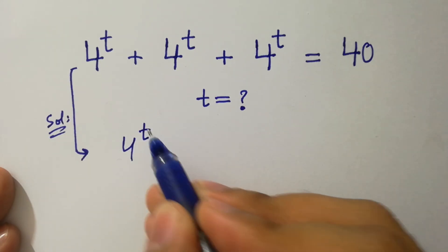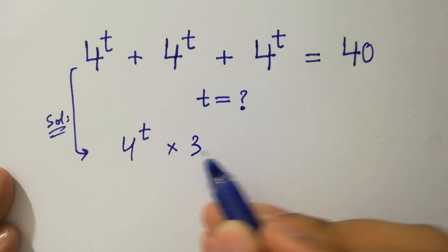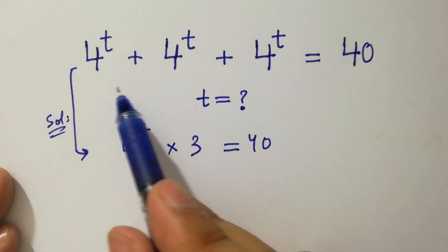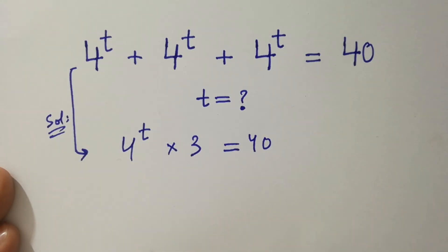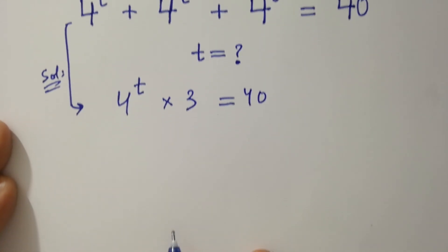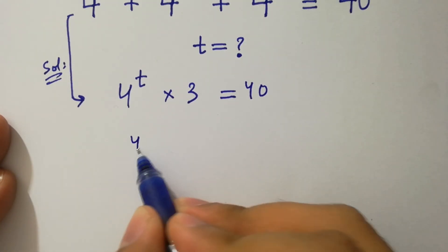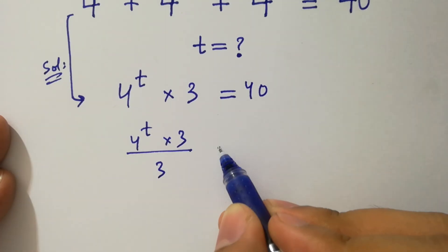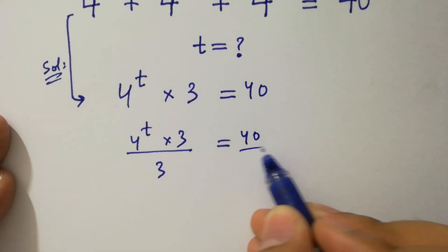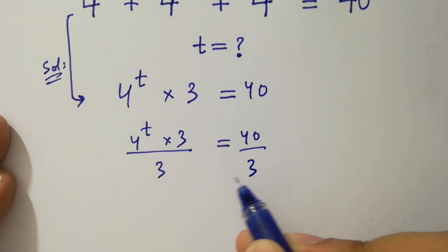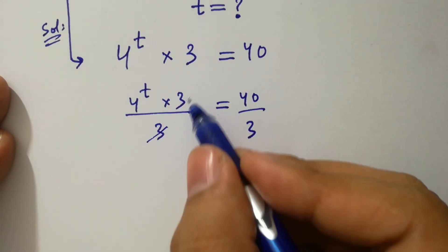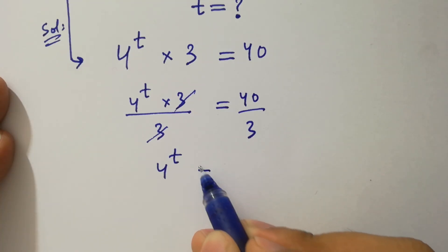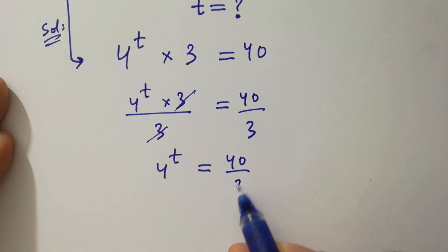This problem is the same as 4 to the power t times 3 equal to 40. If we divide both sides by 3, then 3 and 3 cancel and we have 4 to the power t equal to 40 over 3.